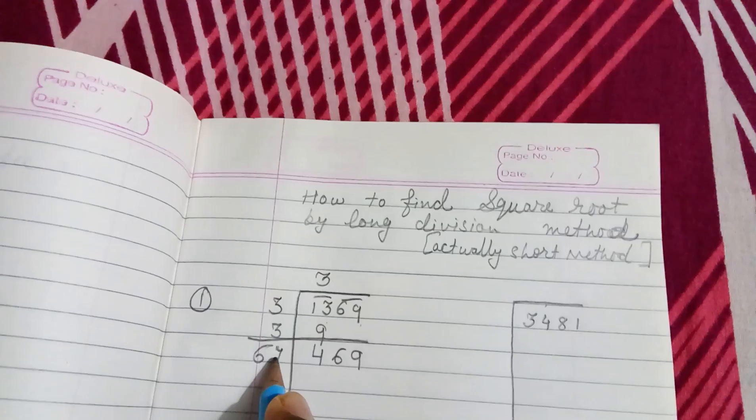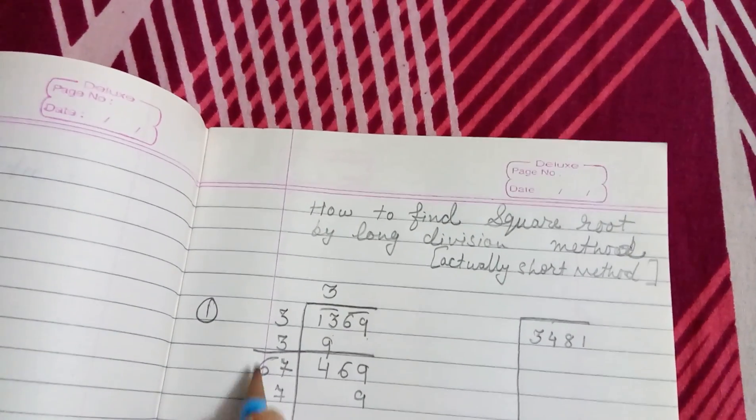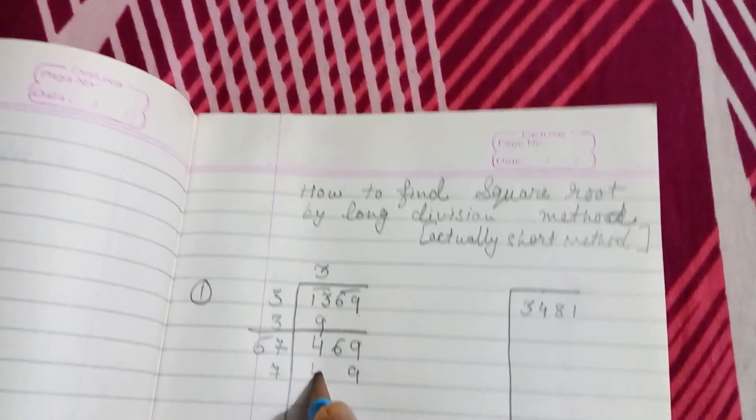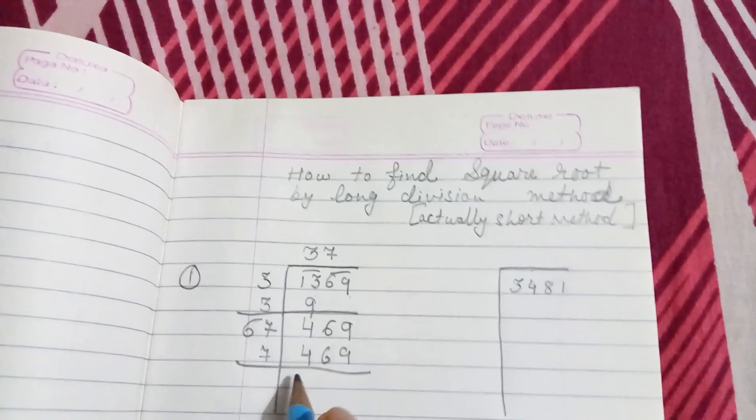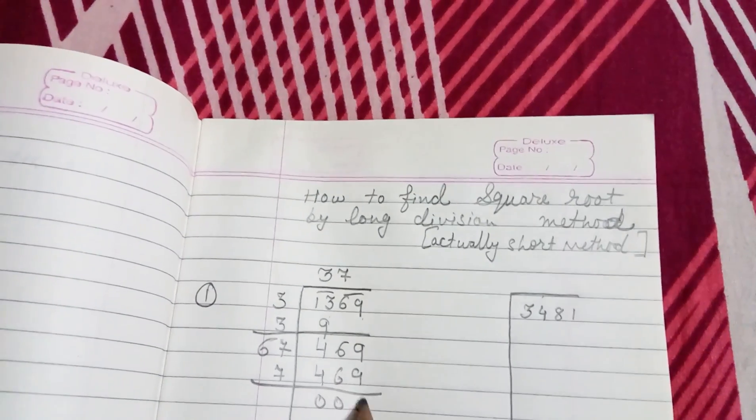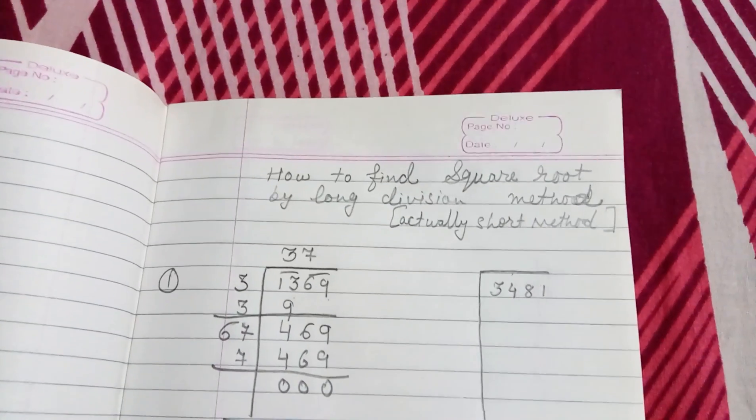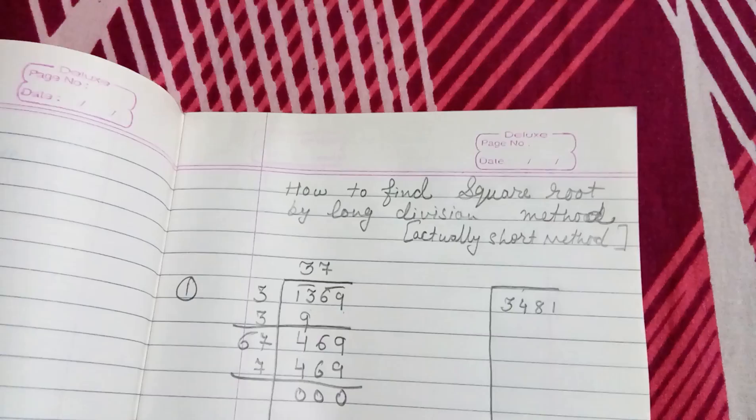Let us check: 67×7, 7×7 is 49 carry 4, 7×6 is 42 plus 4 is 46. So here 7 and here remainder 0, 0, 0. So we get the square root of 1369 is equal to 37.